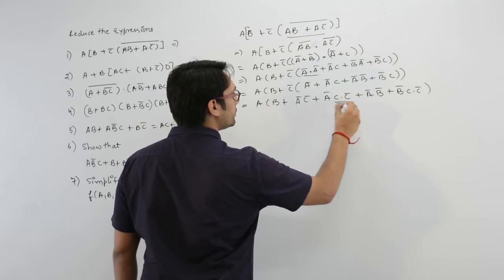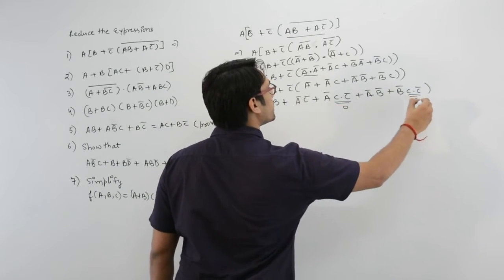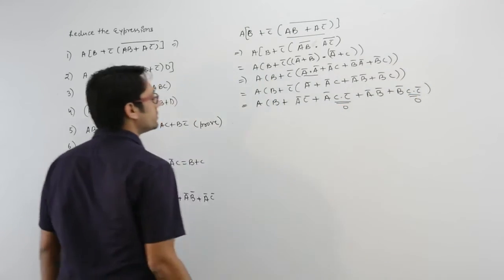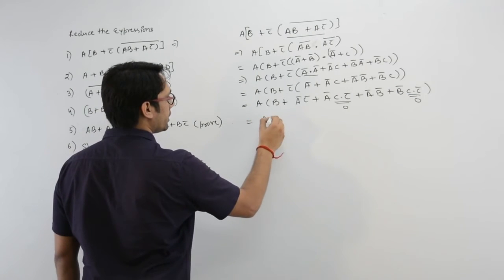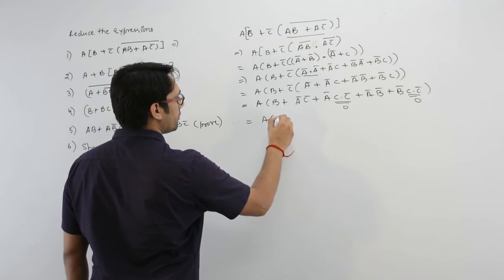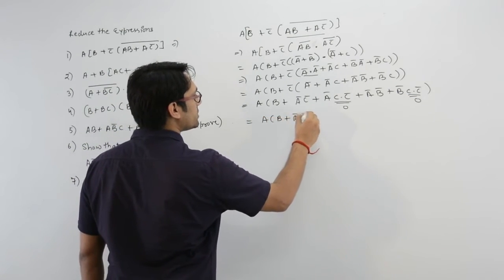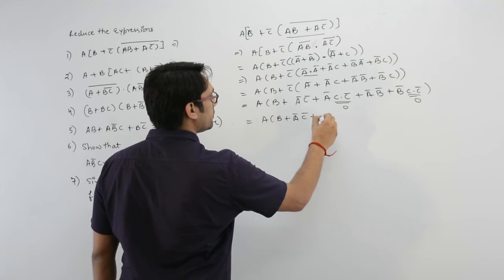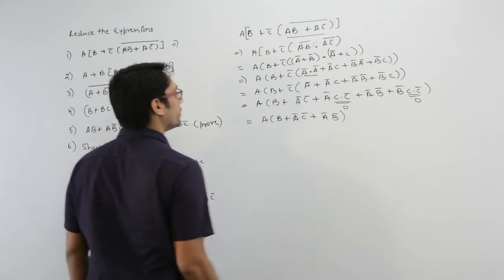The terms with C dot C complement become 0, and similarly the other such term becomes 0. So the expression reduces to AB plus A complement C complement plus A complement B complement only.